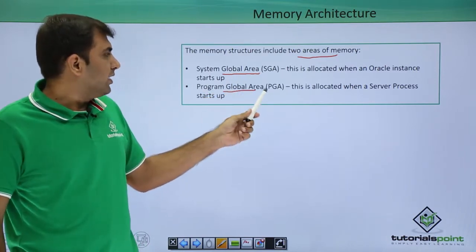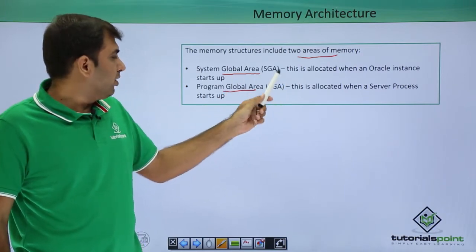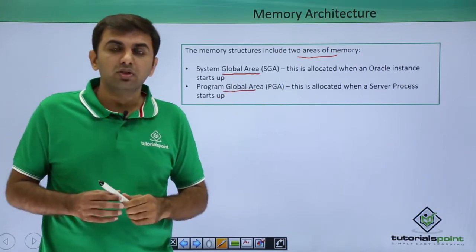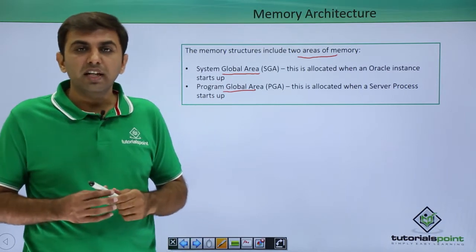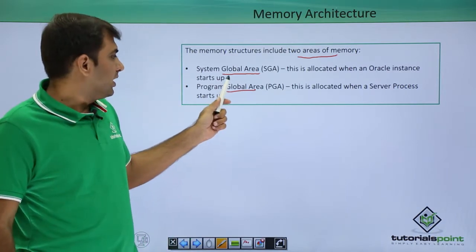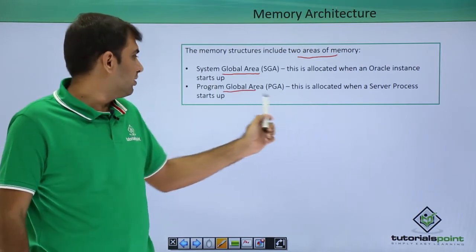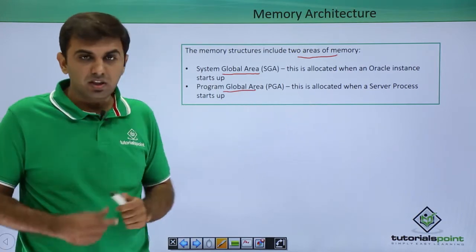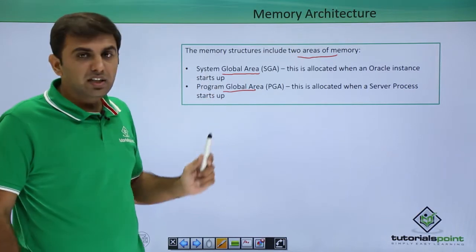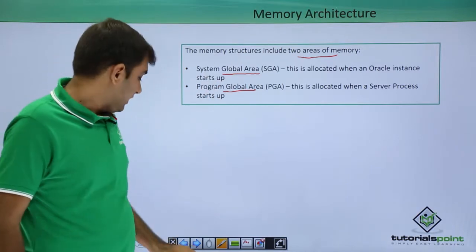So what is SGA? SGA is allocated when the Oracle Instance starts up. When you start up your Oracle Instance, the SGA is allocated. PGA, that is called the Program Global Area, is allocated when the server processes start. So the two components — SGA and PGA — are under the memory architecture.